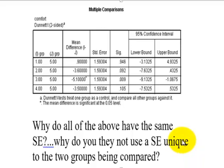So the reason that these standard errors are all the same number — and that's the question, and that's an excellent question — is because of the Dunnett's formula.